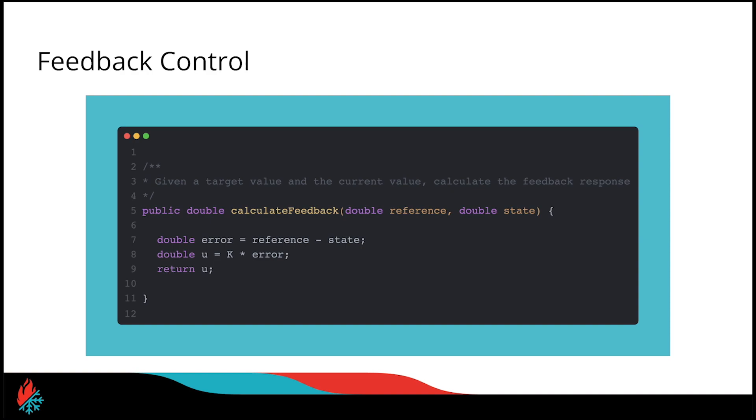So to code up feedback control, that'll look something like this. Here we have a basic feedback control method that takes in our reference and our state. We're calculating our error by subtracting the state from the reference, and then we're multiplying this error by a gain k. And finally, this input u will be sent to something like a motor.